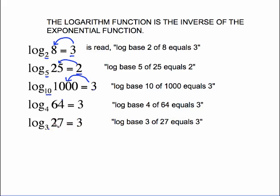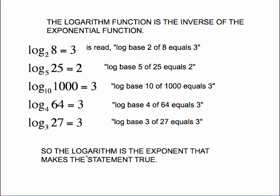Which means the definition for logarithm is simply the logarithm is the exponent that makes the statement true. This right here is an exponent that would go on this 3. Meaning 3, this 3, raised to this 3 equals 27. So the logarithm is the exponent. And what exponent is that? It's the exponent that would go on this base to equal that number.